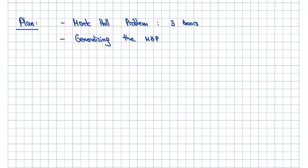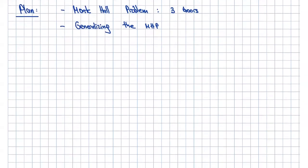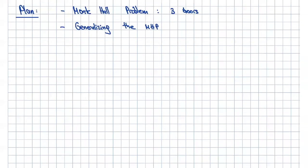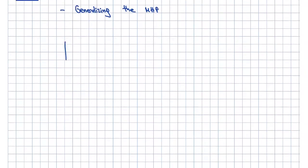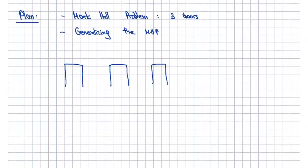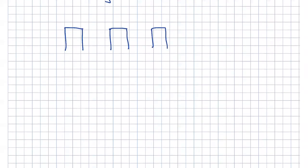Welcome back everybody. In this video I want to share with you the Monty Hall problem, which was a very famous problem. There was once a TV show where you were given three doors, all closed, and you knew that behind one door you had a car, which you wanted, and behind the other two doors there were goats, which you didn't want.